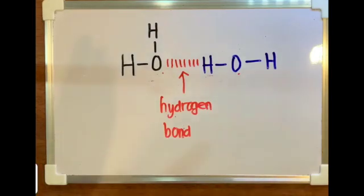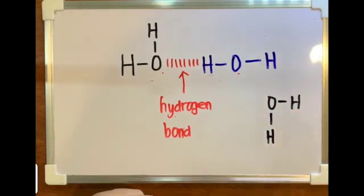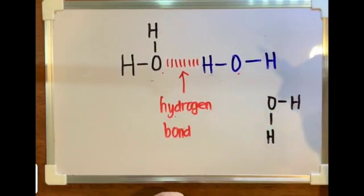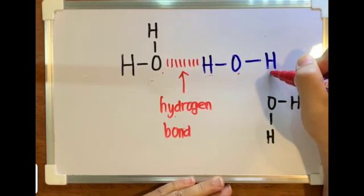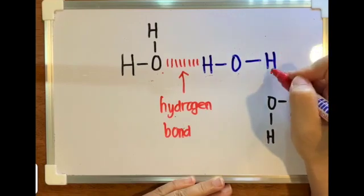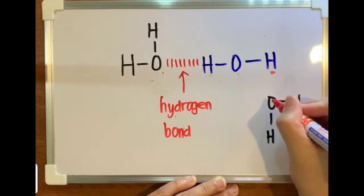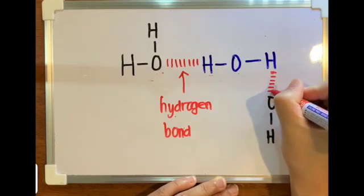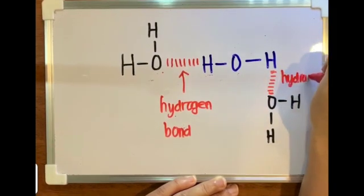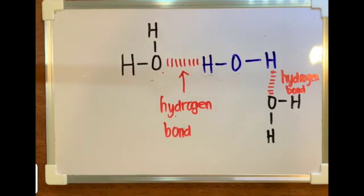Can the water molecule form another hydrogen bond? Yes. If we have a third water molecule, the hydrogen in the blue color water molecule is bonded to the highly electronegative oxygen atom, so it is ready. In the third molecule, we see one oxygen atom which is highly electronegative, and they are going to form another hydrogen bond. This is how we form hydrogen bonds in water molecules.